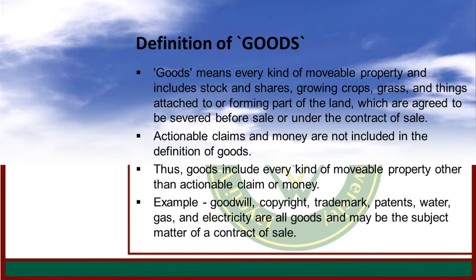Goods mean every kind of movable property and include stock and shares, growing crops, grass, and things attached to or forming a part of land, which are agreed to be served before sale or under the contract of sale. Actionable claim and money are not included in the definition of goods. Does Goods include every kind of individual goods?